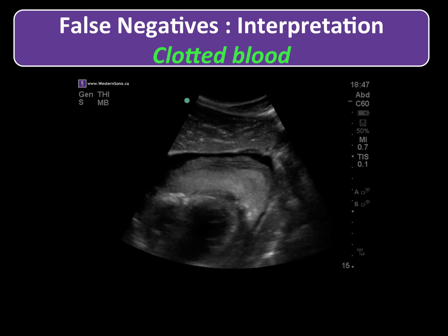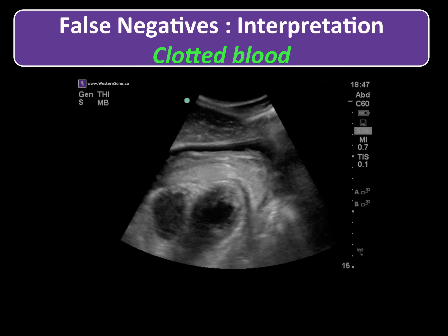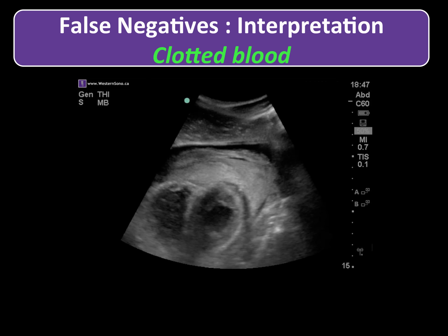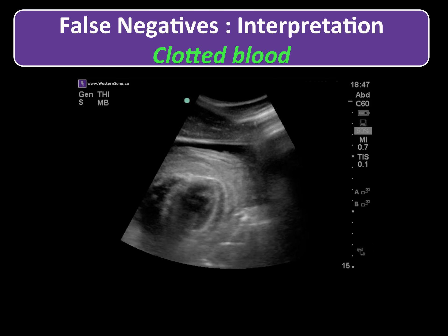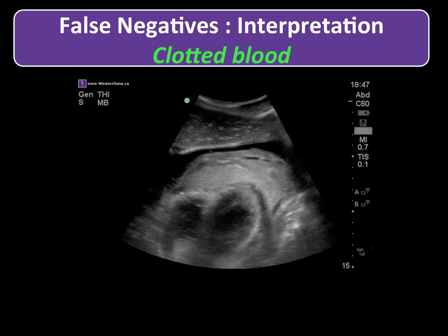This image is of a heart but illustrates the same principle. This patient sustained penetrating trauma to the chest. Some of the blood had already pooled and clotted and instead of appearing anechoic appears almost hyperechoic. To review: the heart is seen here, the newer free-flowing blood is seen here, and this large hyperechoic area is all representative of clot.